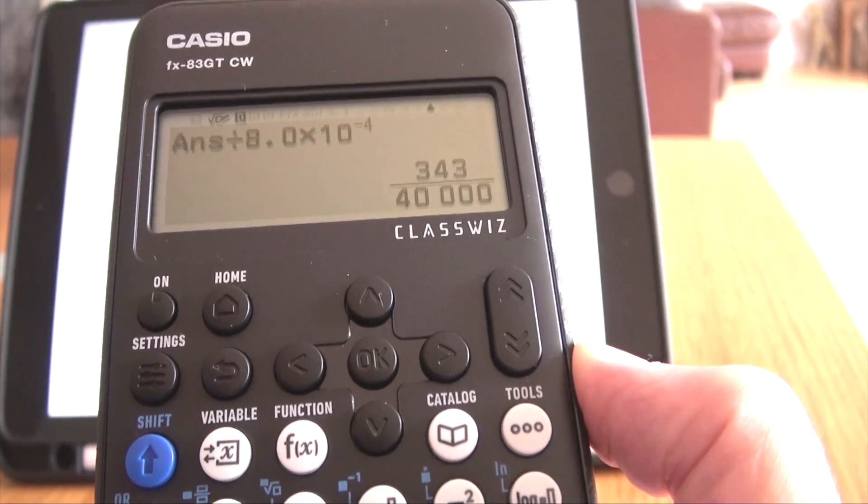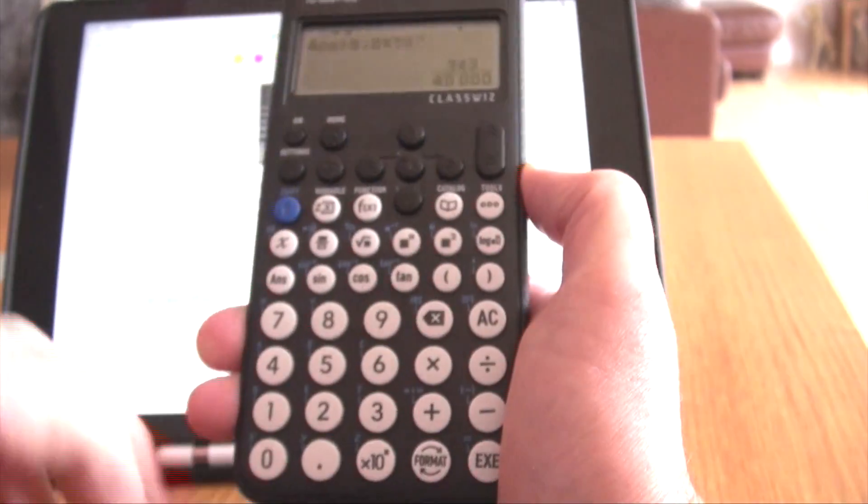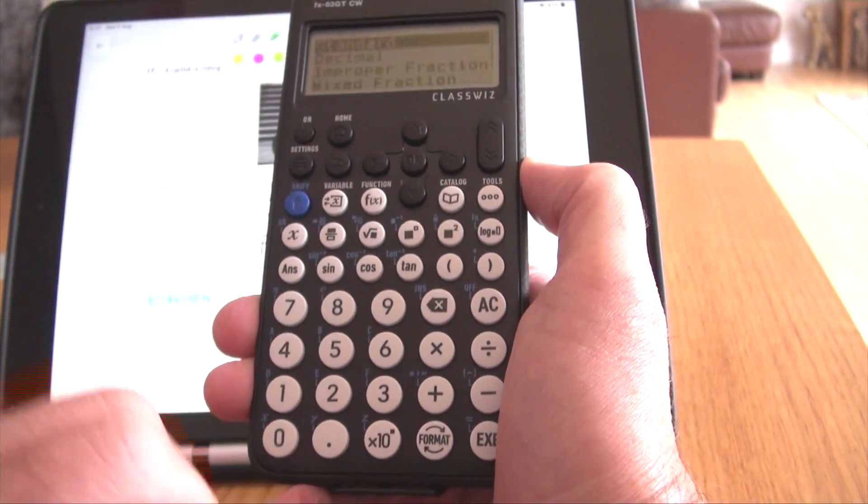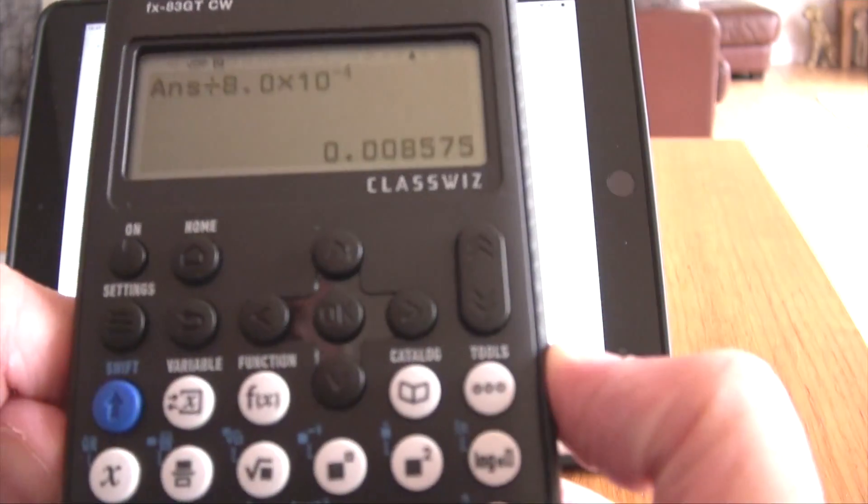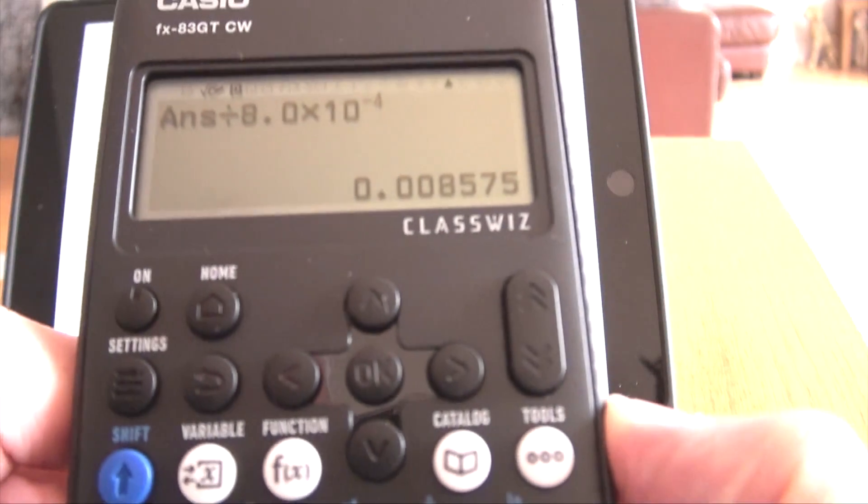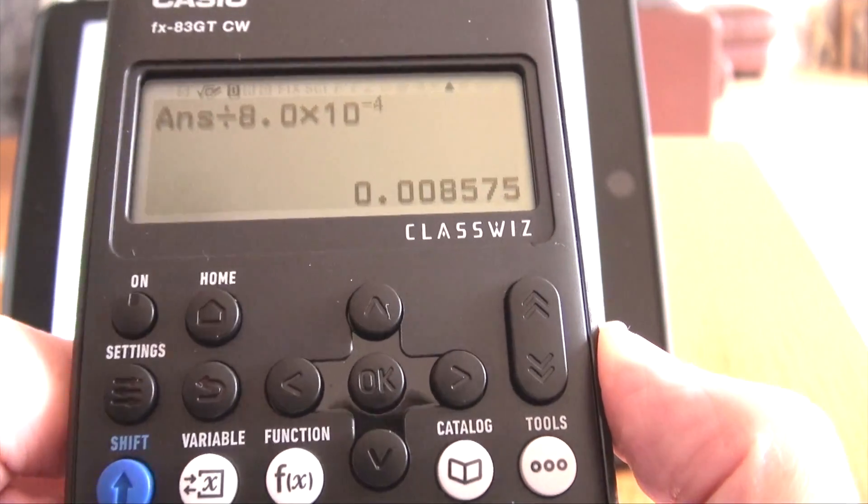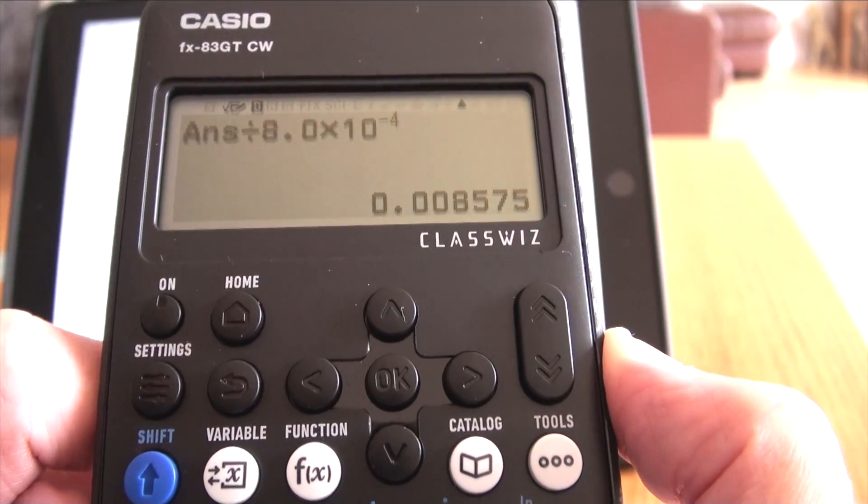Now it's a fraction, we want it as a decimal. If you want it as a decimal, you've either got to press format, go down to decimal, and press execute again. There's the answer. And that is the wrong answer. And that's a problem.